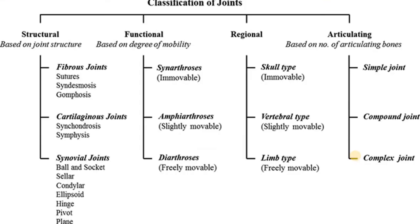Now let's talk about the classification of joints. There are four types: structural classification, functional classification, regional classification, and articulating classification. Structural classification is based on the material connecting the joint — fibrous joint, cartilaginous joint, or synovial joint.